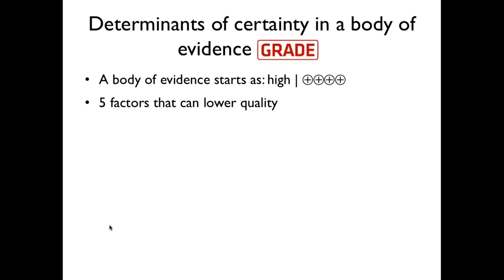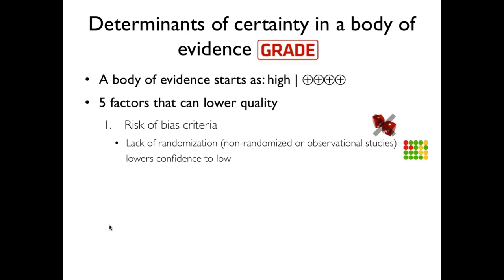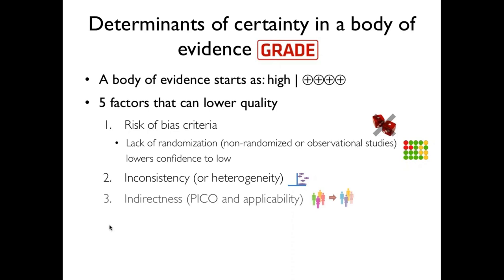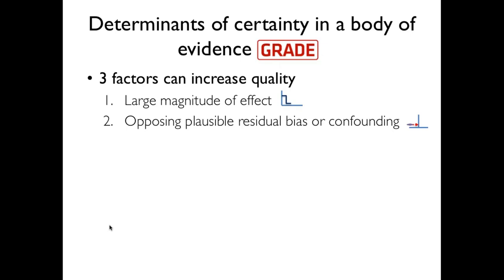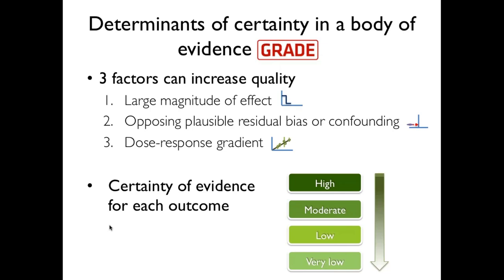The five determinants for rating down the certainty of evidence are risk of bias, inconsistency or heterogeneity, indirectness, imprecision, and publication bias. The three determinants that can increase the certainty of evidence are a large magnitude of effect, confounding or implausible opposite bias, and dose-response gradient. In the end, the certainty of evidence for each outcome falls in one of four categories from high to very low.